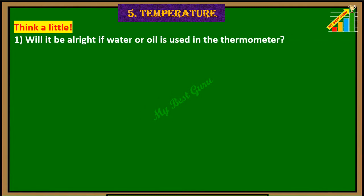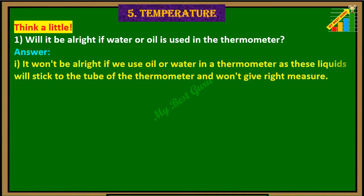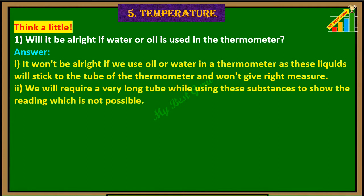Think a little. 1. Will it be alright if water or oil is used in the thermometer? Answer: It won't be alright if we use oil or water in a thermometer, as these liquids will stick to the tube of the thermometer and won't give the right measure. We will also require a very long tube while using these substances to show the reading, which is not possible.